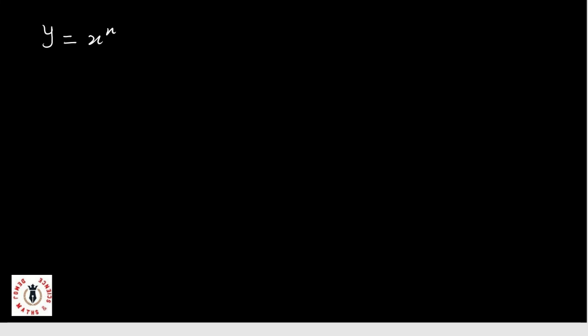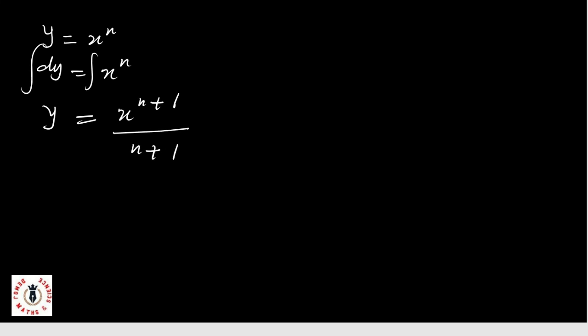From this, I can draw the conclusion that if dy equals x raised to power n, then integrating gives y equals x raised to power n plus one, over n plus one, plus C, where C is a constant. Shortly I'll explain why we have the constant C, and in a subsequent class we'll see how to treat it.